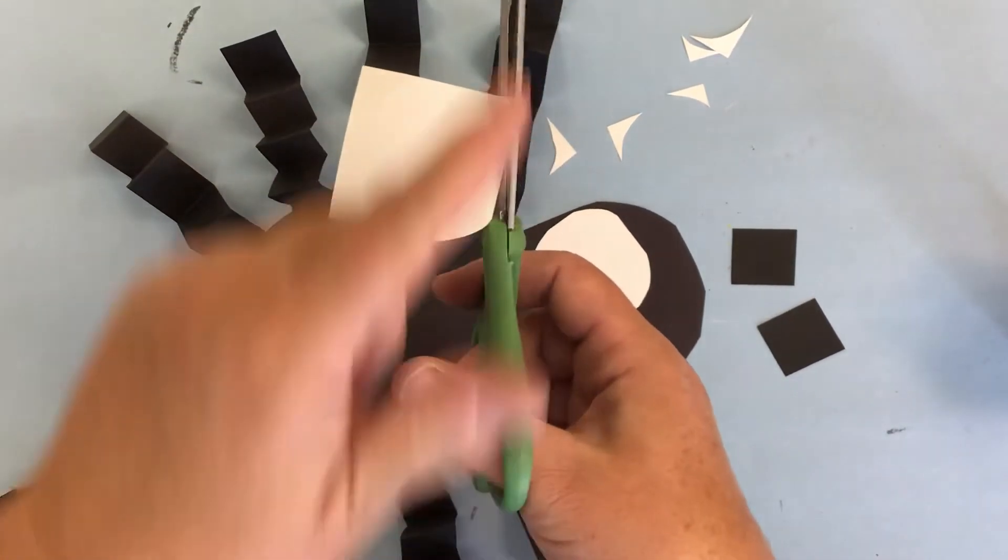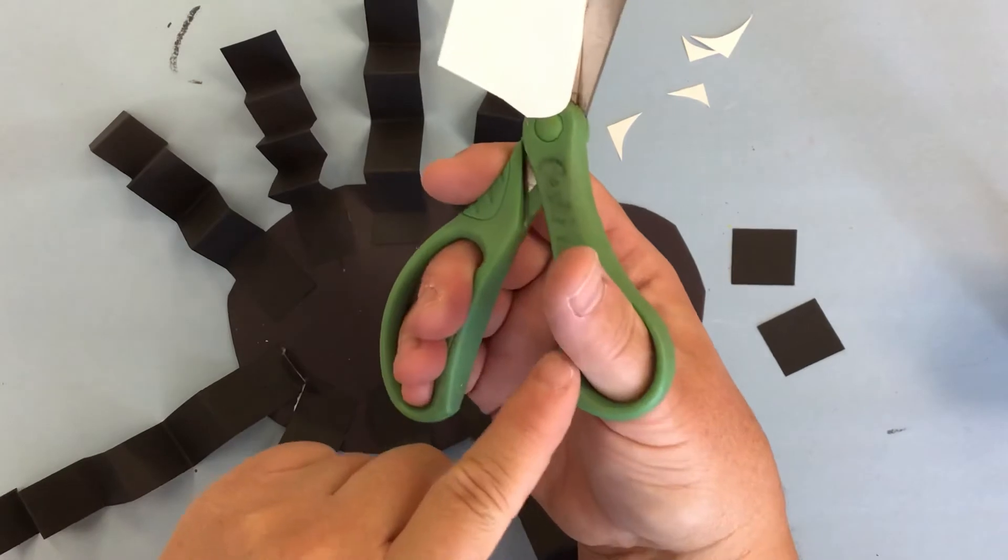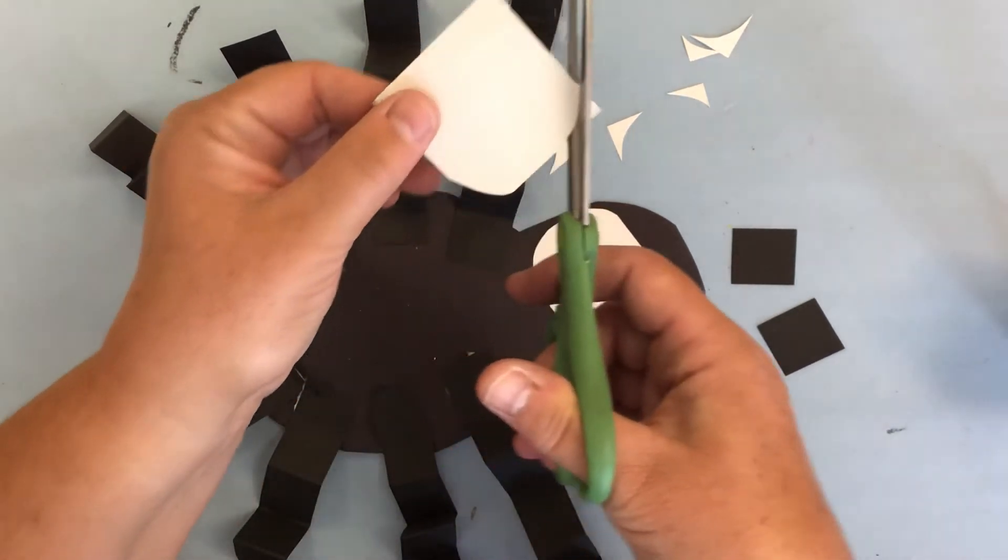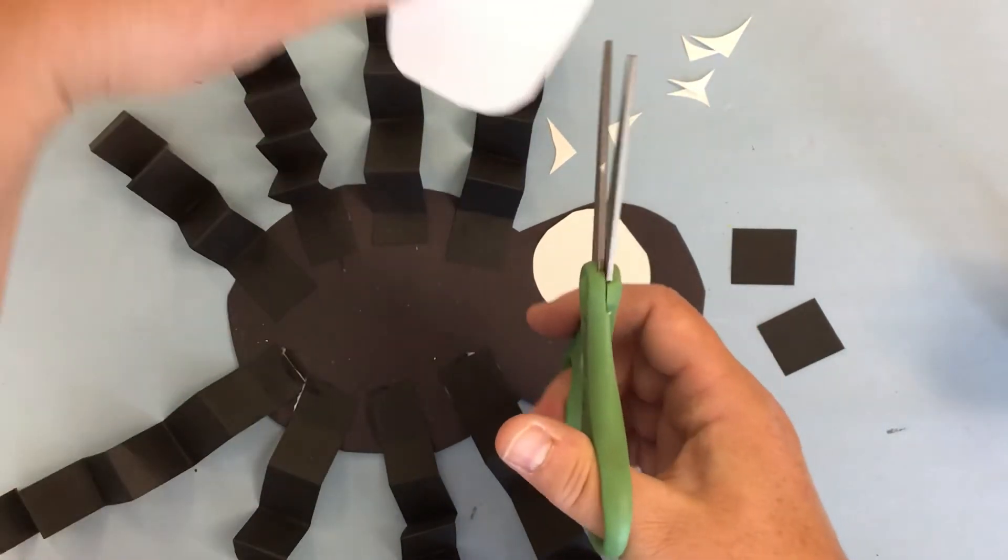My scissors are here. They're pointing out. My thumb is on top. And round it off. This hand is doing the turning.